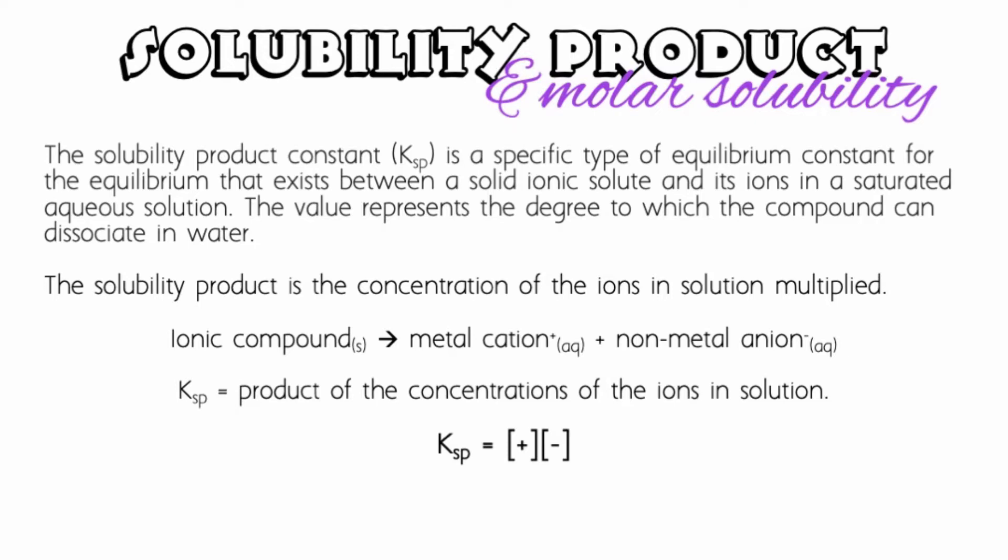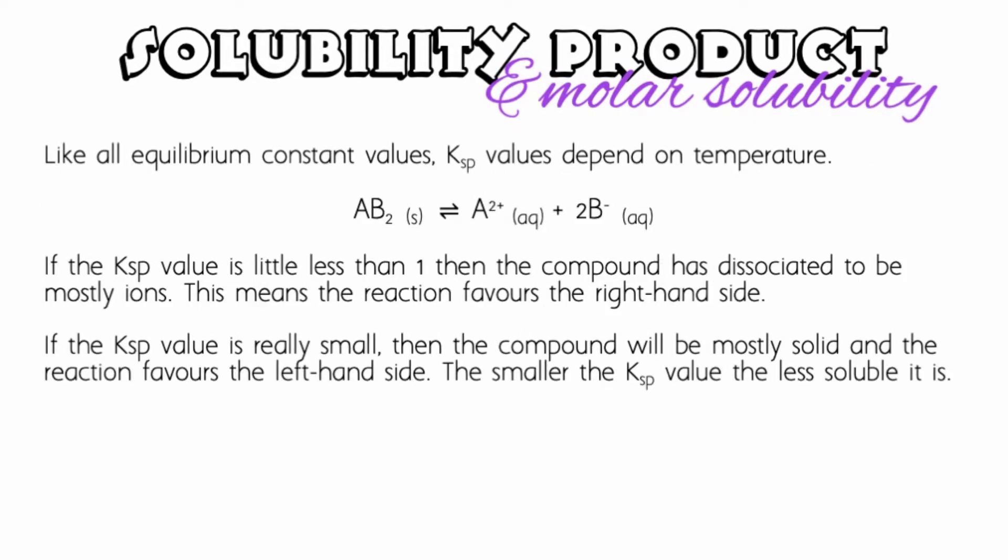So what is the solubility product, also known as Ksp? What does it tell us? If the Ksp value is a little less than one, then the compound has dissociated to be mostly ions. This means that the reaction favors the forward reaction, favors the right-hand side of an equation where most of the ionic solid has dissociated.